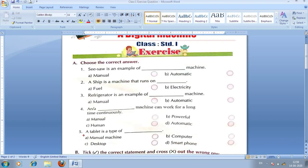Fifth number. A tablet is a type of dash. Tablet kis prakar ka device hai? Option a, manual machine hai, option b, computer hai, option c, desktop hai, option d, smartphone hai. Toh, babu, tablet, ek prakar ka computer hai. Toh, hamara option b, bilkul hi sahi hai. So, like this, I covered section a.